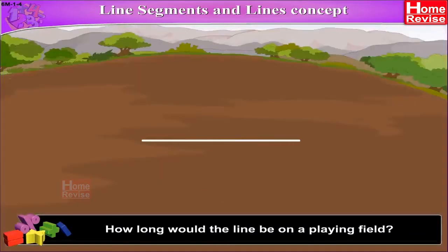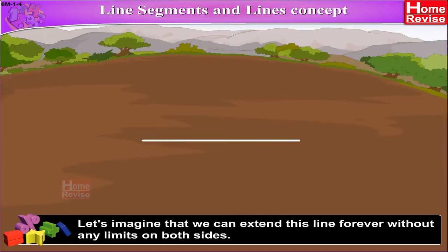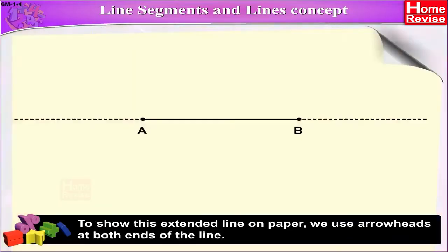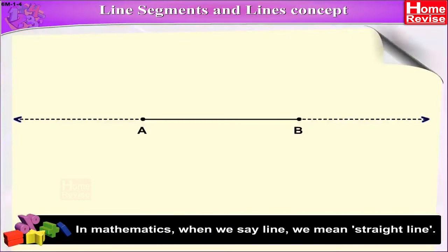How long would the line be on a playing field? Let's imagine that we can extend this line forever without any limits on both sides. To show this extended line on paper, we use arrowheads at both ends of the line. In mathematics, when we say line, we mean straight line.